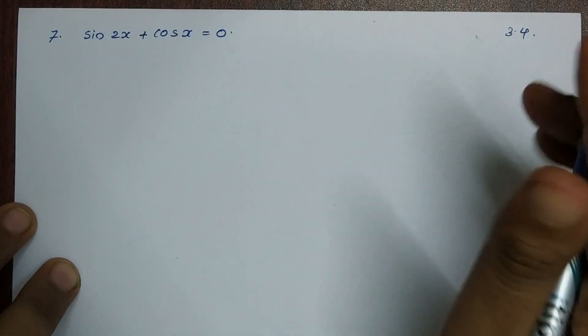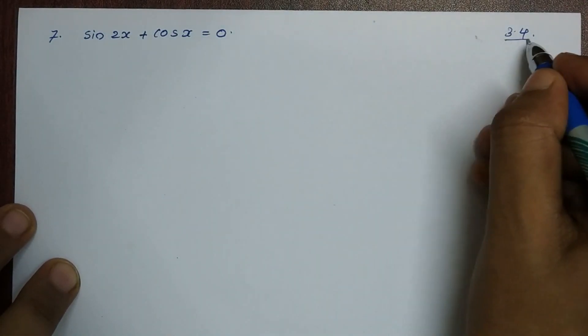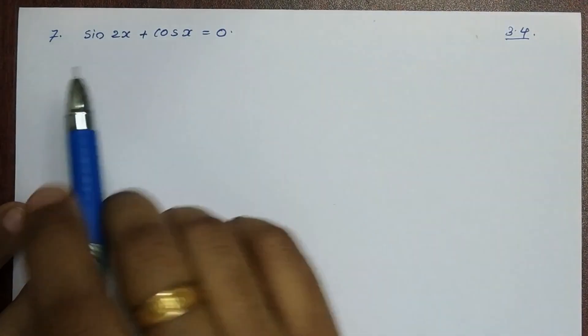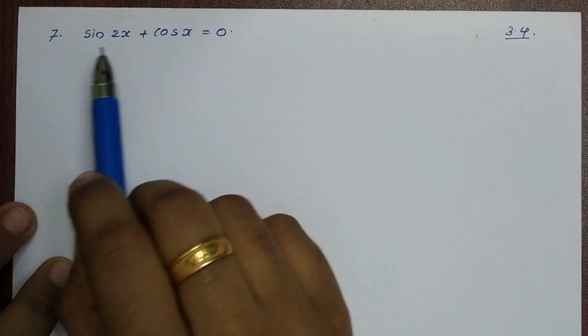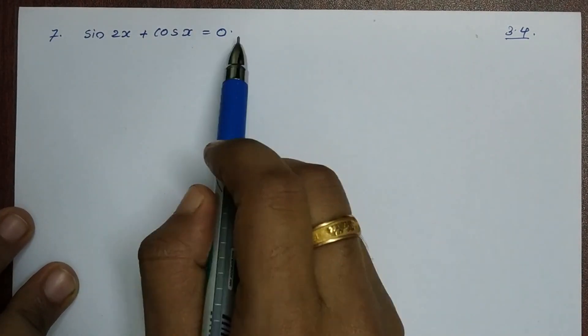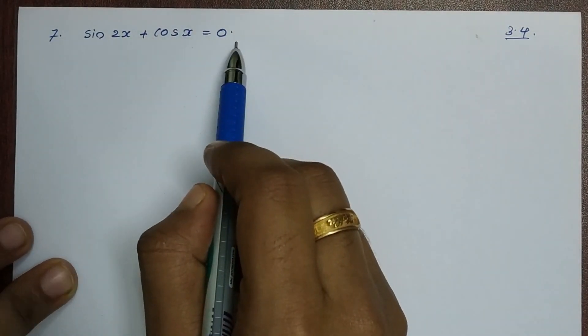Hi everyone, we have problem 7 in exercise 3.4: sin2x plus cosx is equal to 0.